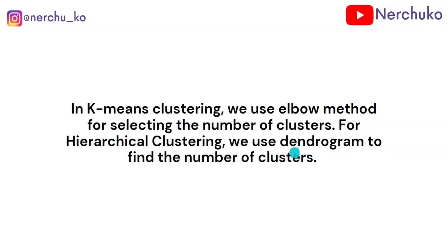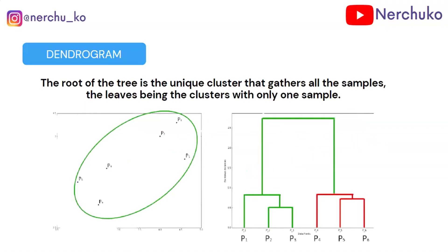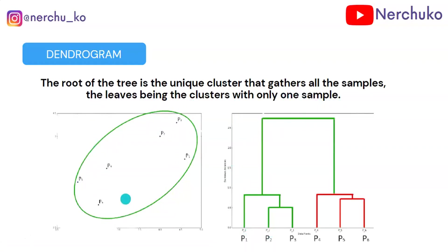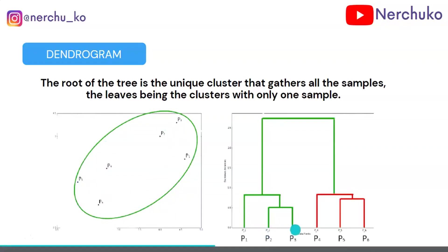We will use dendrograms to determine the optimal number of clusters. Dendrograms have a tree structure. The root of the tree is the unique cluster that gathers all the samples, while the leaves are the clusters with only one sample — meaning the root is one big cluster of all observations, and each leaf is a single observation.